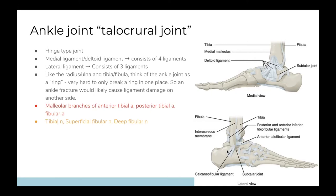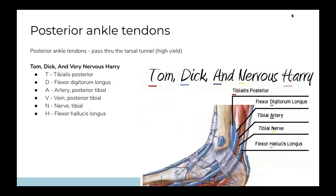The nerves supplying the ankle are the tibial nerve, superficial fibular, and deep fibular — we'll get into that later. The neurovasculature is supplied by malleolar branches. Your malleoli are the two bumpy bits on either side of your ankle. A complex anastomosis forms the neurovasculature, coming from the anterior tibial, posterior tibial, and fibular arteries — the three main arteries of the leg.